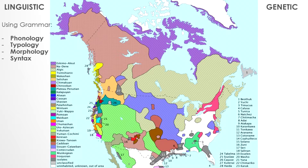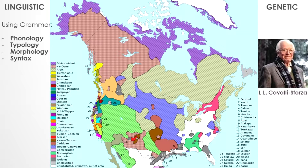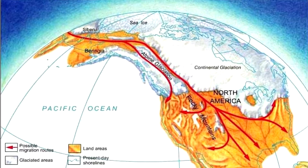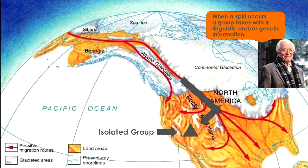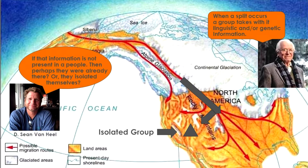Luigi Luca Cavalli-Sforza, Italian population geneticist, suggests that at the time of a split, with one group of people moving away from another, we see both a genetic and linguistic isolation. Thus, if we can genetically connect an isolated group with a larger family, it will not only show us a possible linguistic connection, but also a genetic migration pattern. Language follows the people.